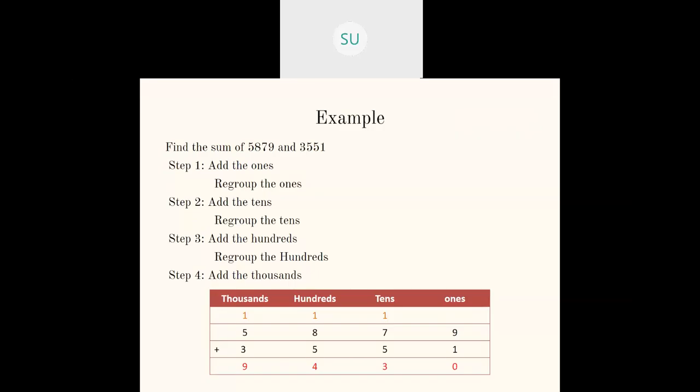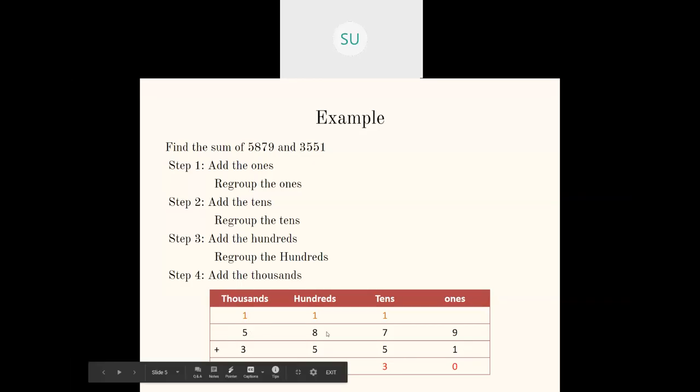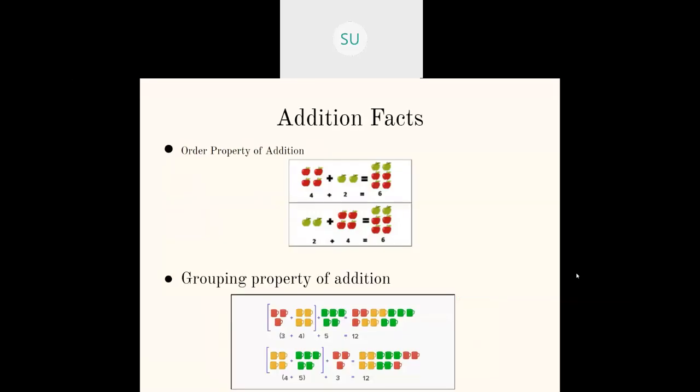Similarly we add the tens place; if the sum is greater than nine we regroup and carry over to hundreds place. Then in the hundreds place we add all the digits; if the answer is greater than nine we regroup and carry over to thousands place. Then we add all the digits in thousands place and get our answer. For example, 5,879 plus 3,551 gives an answer of 9,430, where we regrouped ones, tens and hundreds.